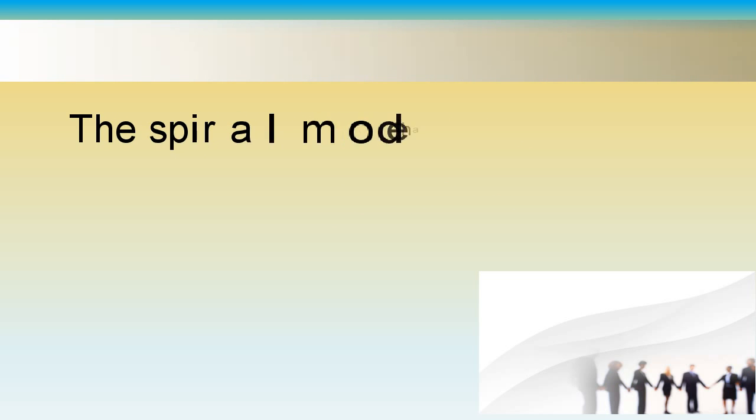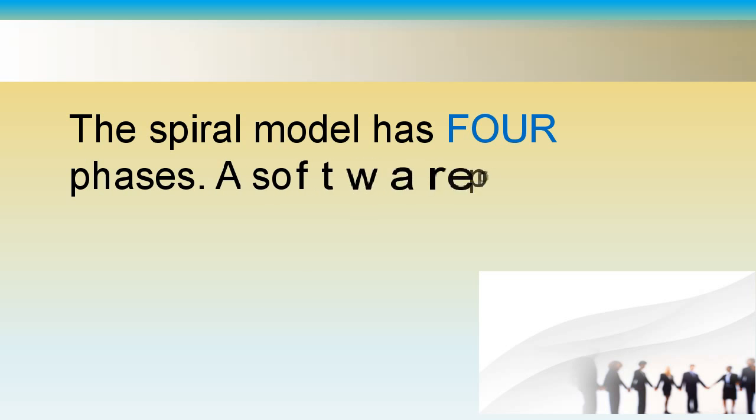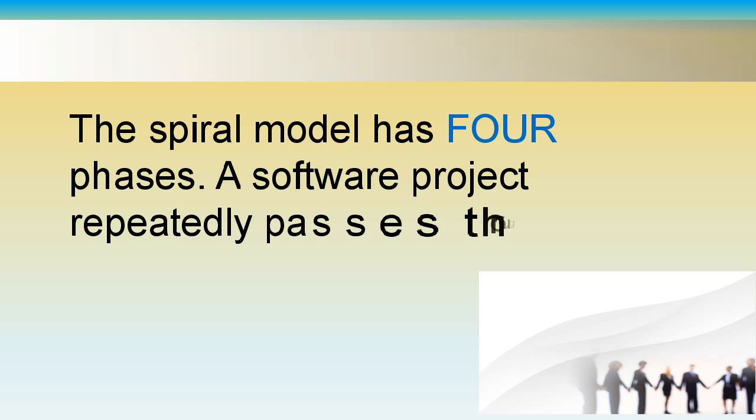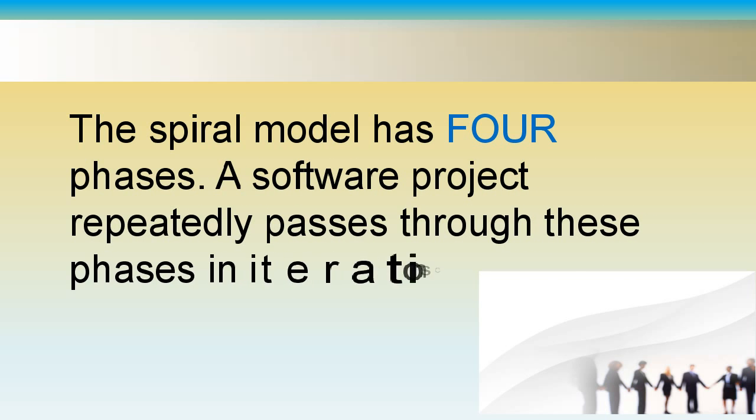The spiral model has four phases. A software project repeatedly passes through these phases in iterations called spirals.